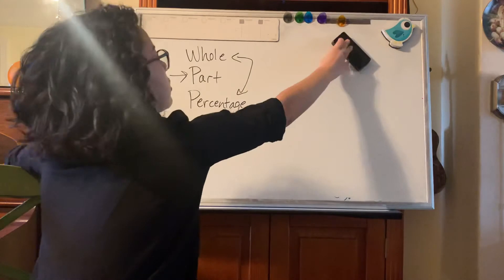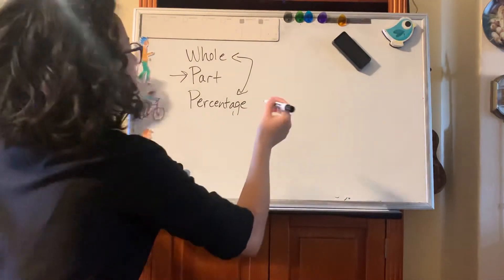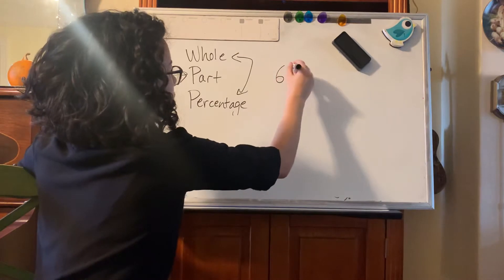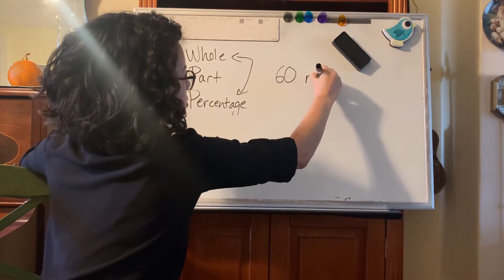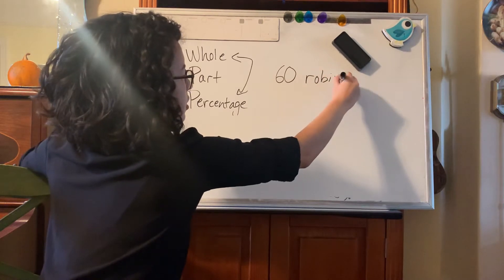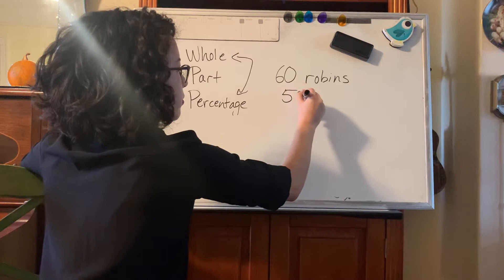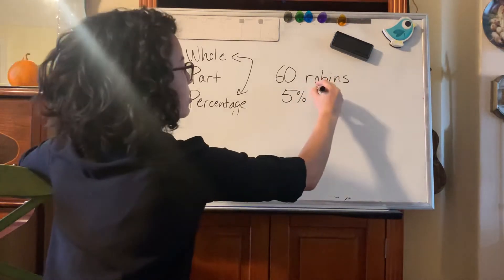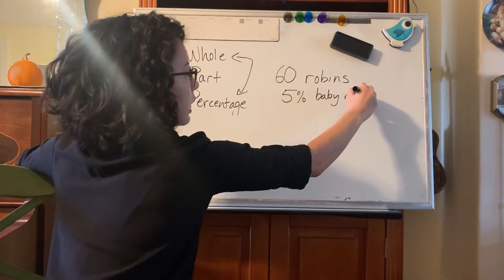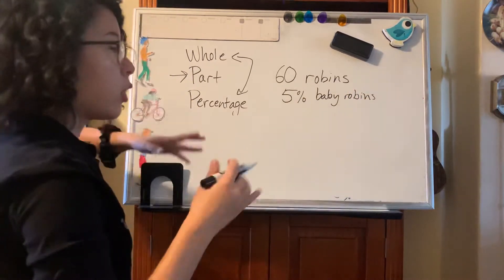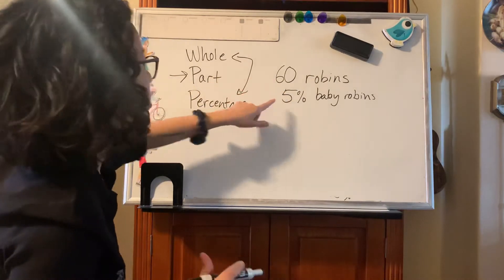Okay, here is another problem. There are 60 robins. I like those birds. There are 60 robins and five percent of them are baby robins. And then the question would ask, how many baby robins are there? And that's the part. So we have the whole, we have a percentage and we have to find the part.